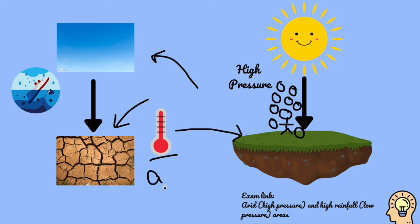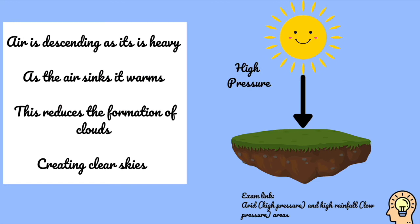So arid just means dry. Deserts are arid environments - a lack of moisture. So wherever we have high pressure, no condensation, no clouds can form because of our sinking air, which is going to generate much more arid conditions. So you need to know for your exam about this arid environment. Your air is descending as it is much heavier. As the air sinks, it starts to warm up. This reduces the formation of clouds, which creates much clearer skies, leading to our arid environments.